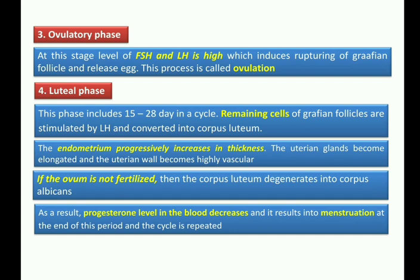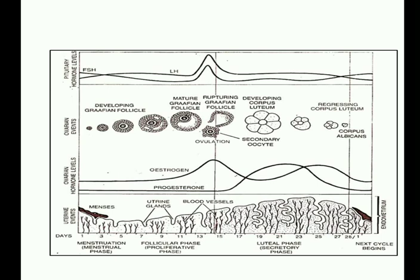Now let us look at a graph showing all events of the menstruation cycle. The graph has four levels: first, the pituitary hormone level — showing the effect of pituitary hormones in the menstruation cycle; second, ovarian events — changes inside the ovary; third, ovarian hormone levels — the ups and downs of ovarian hormones; and fourth, uterine events — changes in the endometrium.